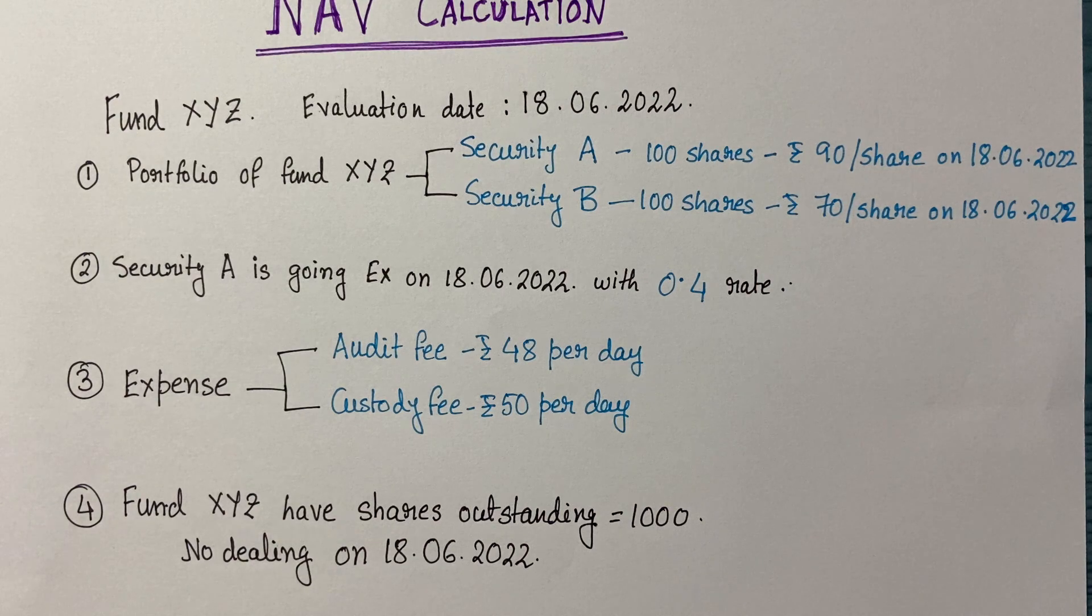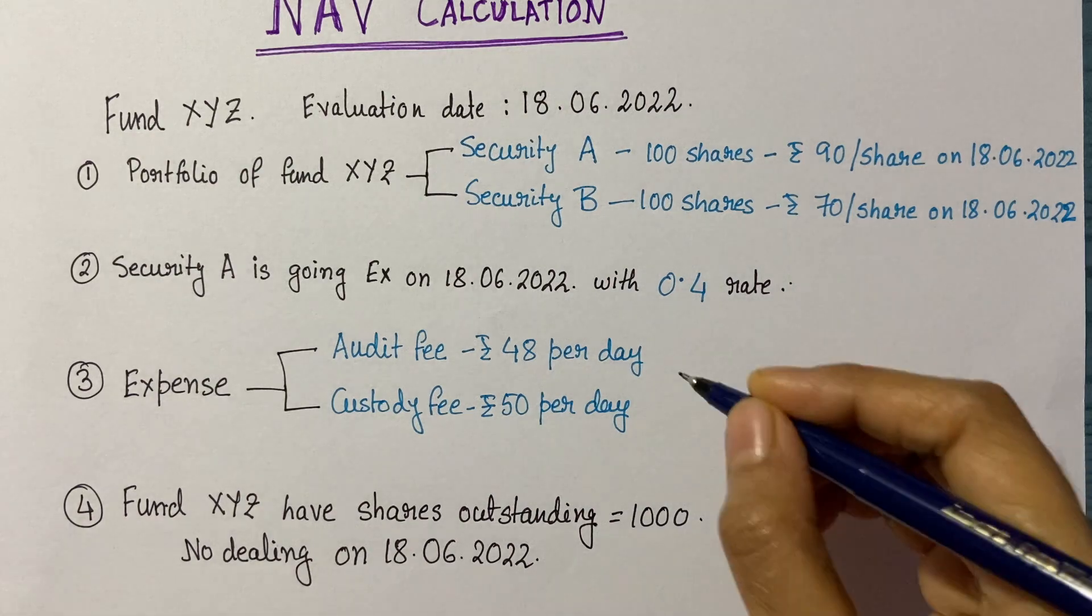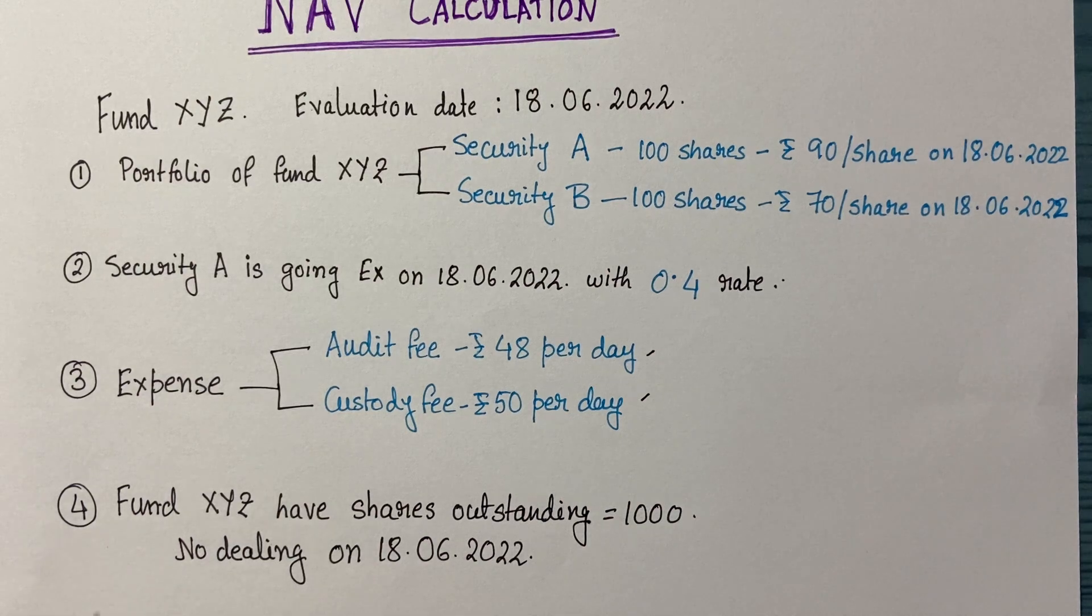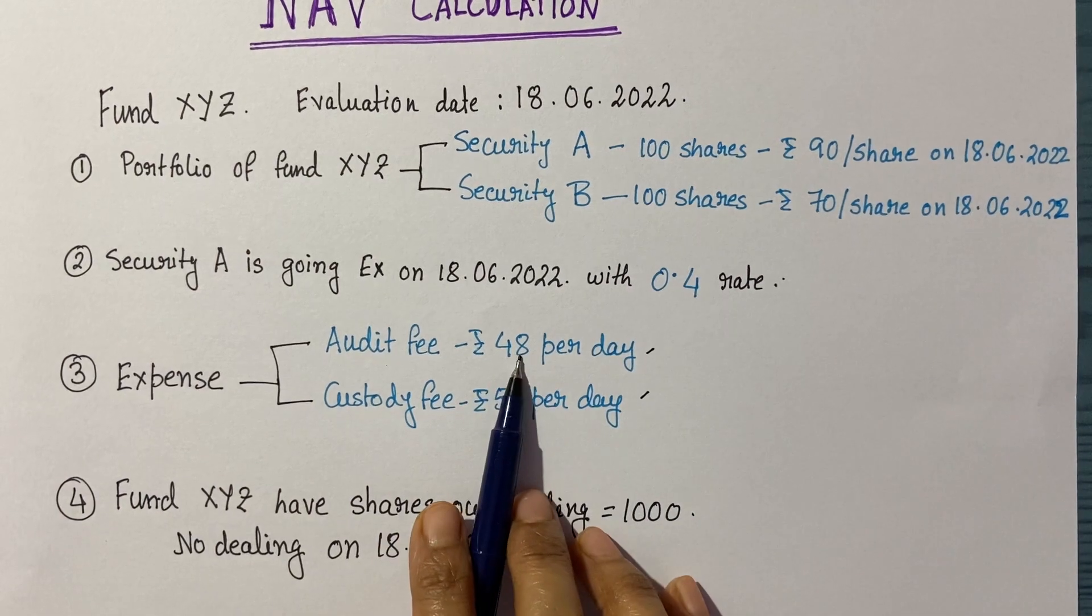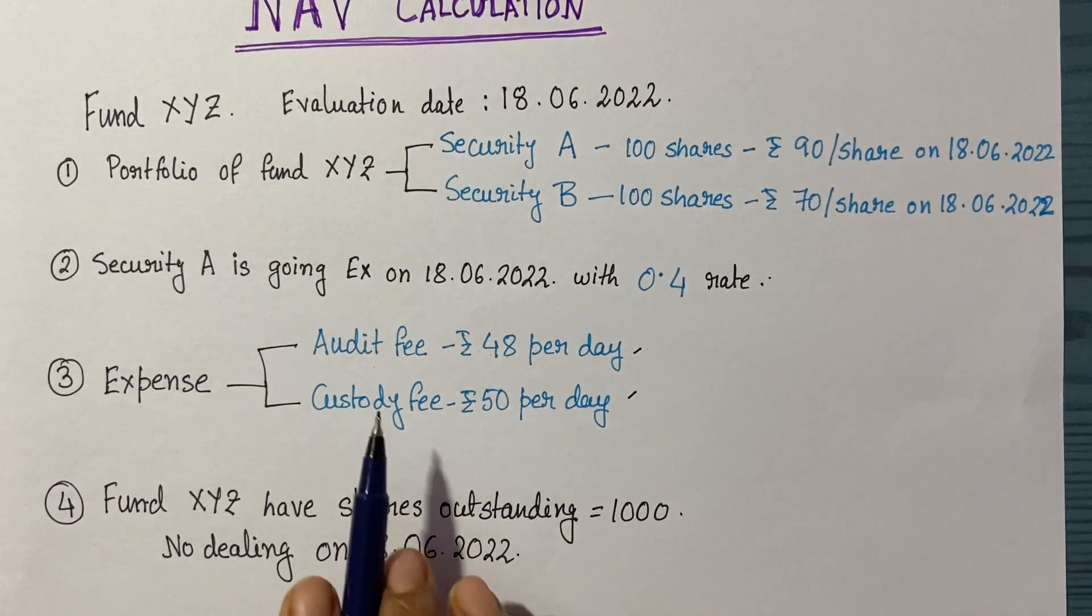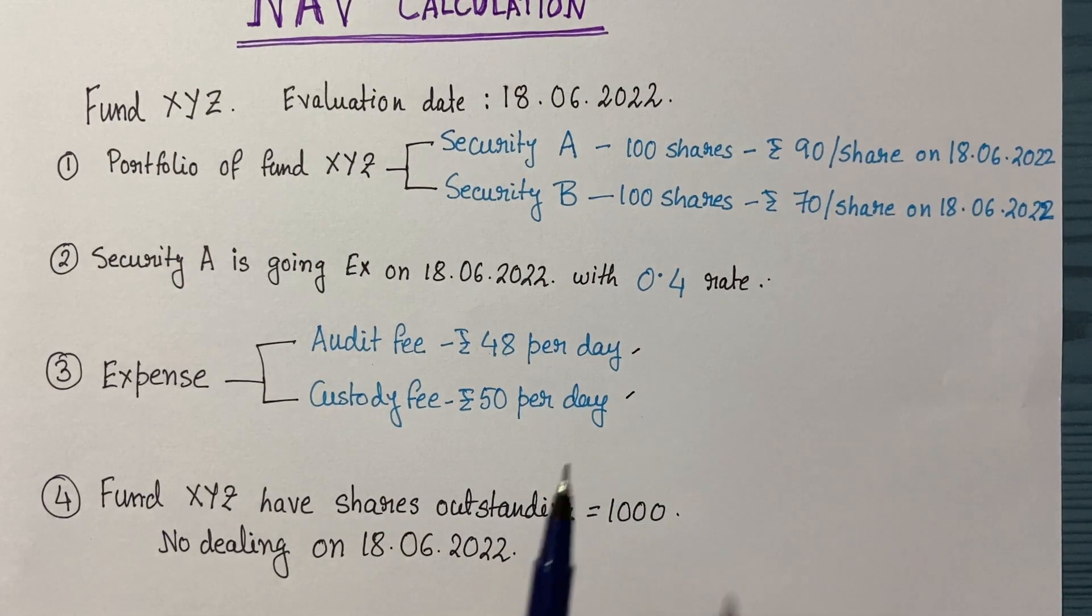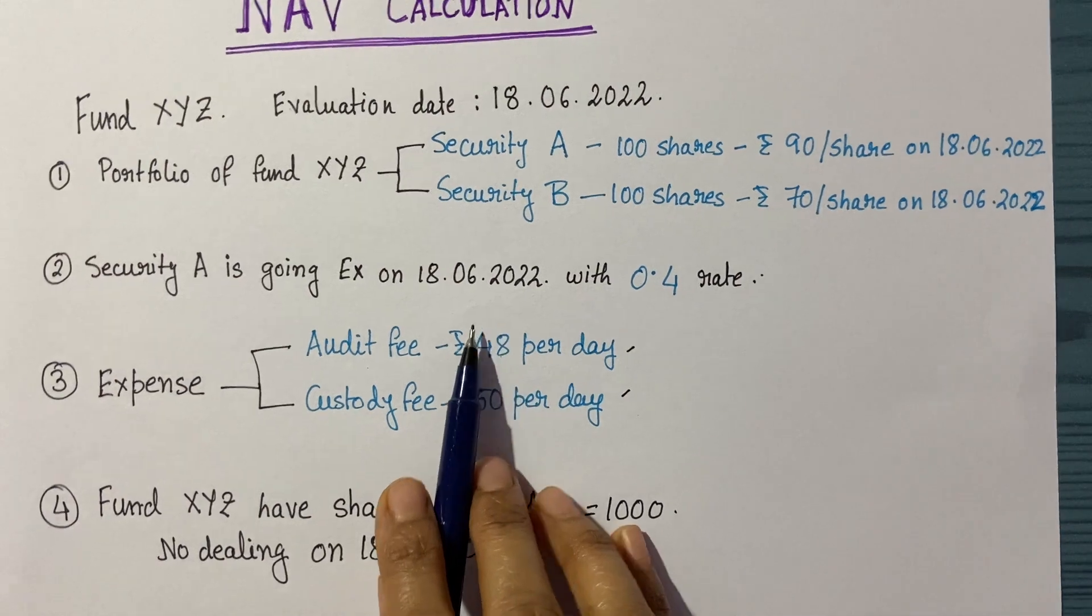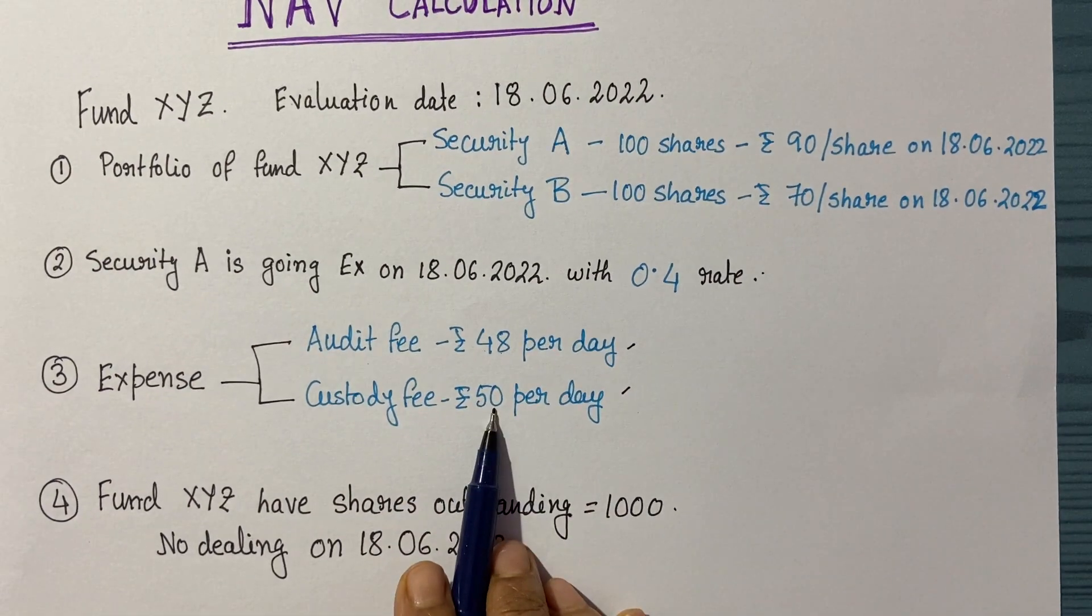One is fixed expense and one is variable expense. The calculation of variable expense is quite different—you need the prior or current TNA (total net asset) and a rate. To keep today's example simple, I'm only taking two expense components: audit fee and custody fee, both as fixed expenses. Audit fee is 48 rupees per day and custody fee is 50 rupees per day.